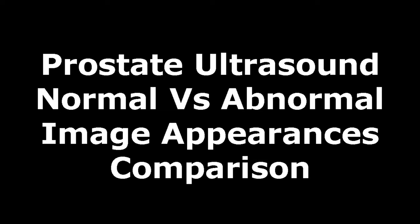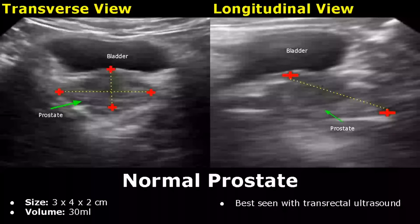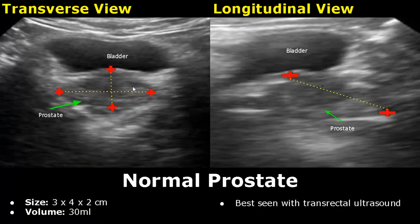Hello everyone, this is Dr. Sam and today we will study Prostate Ultrasound. Here we have transabdominal images of the prostate in transverse and longitudinal planes. The normal dimensions are 3x4x2 cm and the normal volume shouldn't be more than 30 ml.